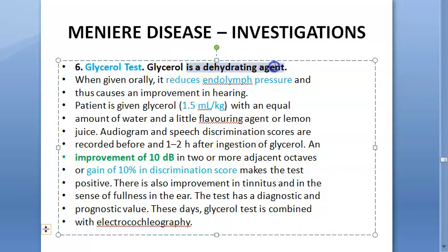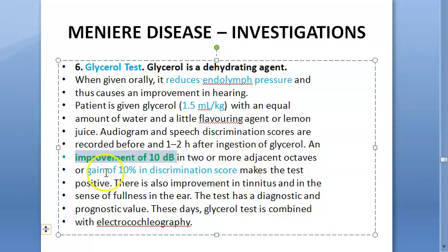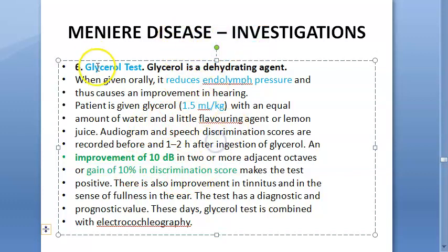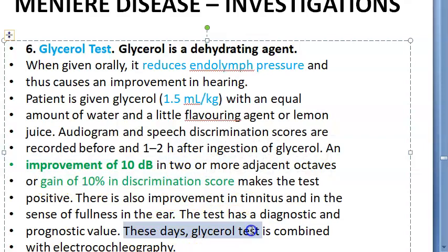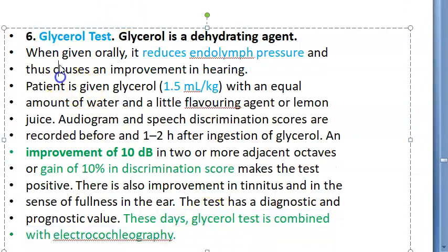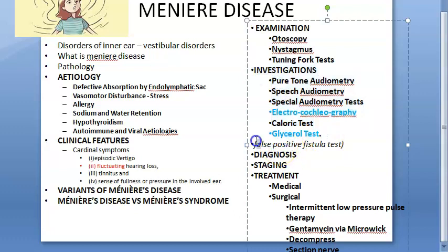The glycerol test is important: glycerol is a dehydrating agent that reduces endolymphatic pressure. After administering glycerol, there is improvement of 10 dB gain or a 10% improvement in discrimination score in two or more adjacent octave waves. These days, the glycerol test is combined with electrocochleography for greater diagnostic value.